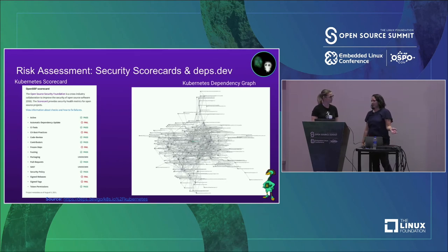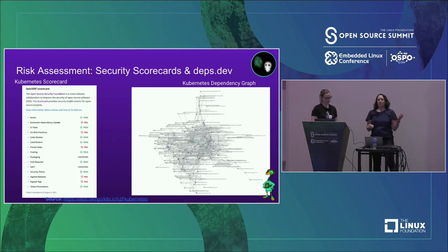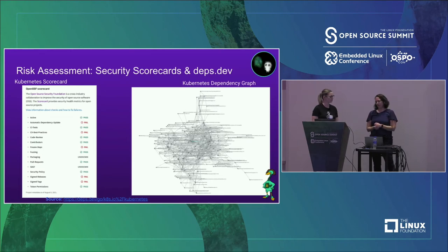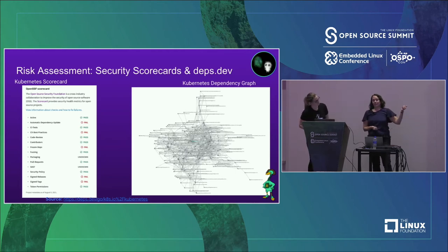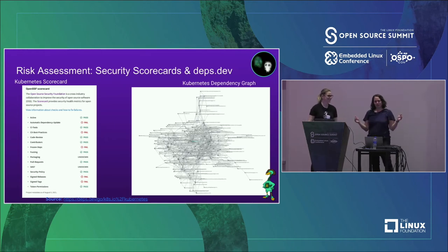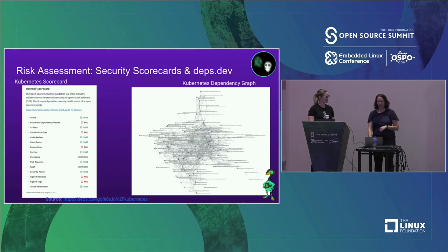Another project I wanted to mention is a Google project called Deps.dev, launched in June. One of the interesting things is it's pulling in the Scorecard data. You can go to the site, type in a project, and get a graph of all the dependencies of that project along with Scorecard results. Right here we're looking at the Kubernetes project, and the graph is a little bit daunting - just to give you a full sense of how many dependencies these big projects rely on.